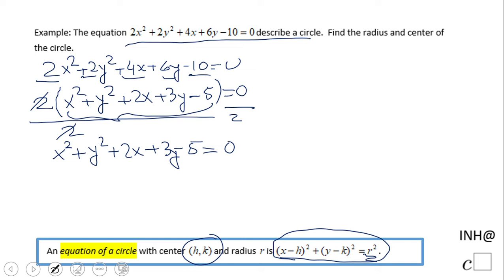0. So now we're going to arrange the things based on their variable. What do I mean by that? x squared plus 2x plus y squared plus 3y minus 5 equals 0. And now we're going to complete the square.